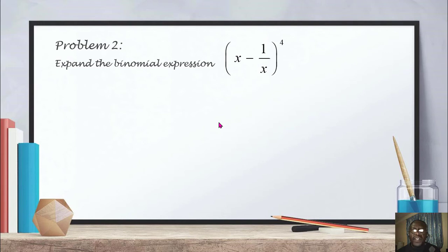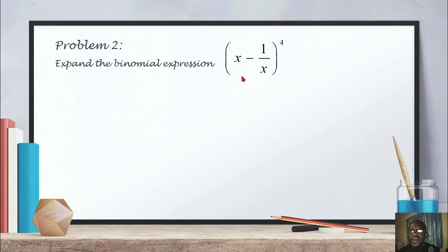Welcome to Expanding Binomial Expressions using Pascal's Triangle, problem number 2. Here we want to expand x minus 1 over x, everything raised to the power 4.